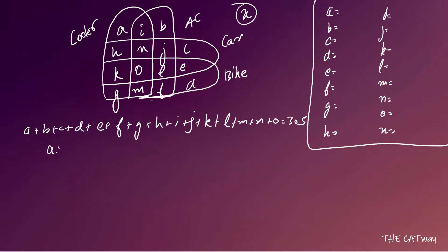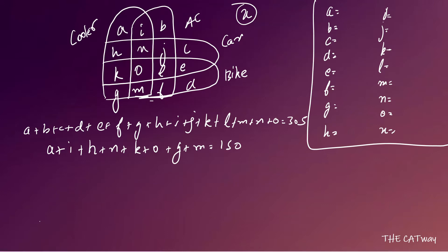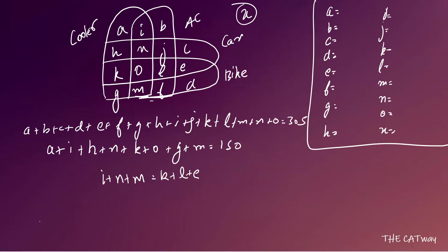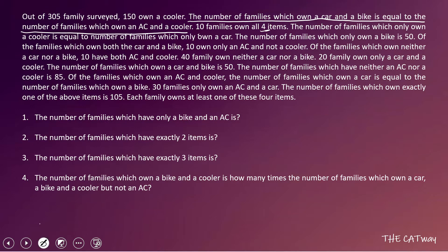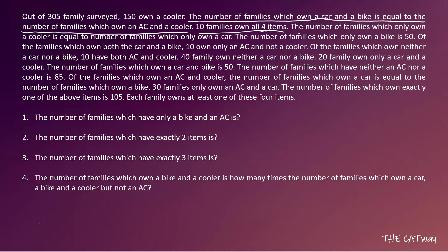The condition that car-and-bike families equal AC-and-cooler families: car and bike covers E, L, O, K; AC and cooler covers I, N, O, M. Since O is common to both sides, we write I + N + M = K + L + E. Also, 10 families own all four items, so O = 10.